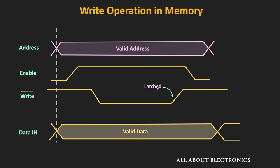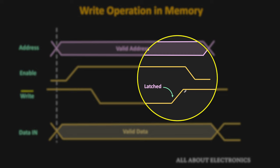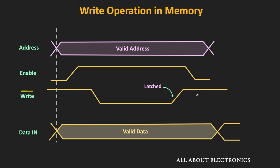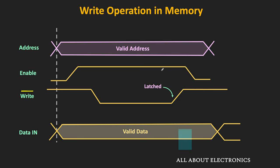At this point, the data is latched in the memory, and as soon as it is latched the write signal gets deactivated. Once it is deactivated, after some time the enable signal is also deactivated. Until the control signal gets disabled, the address and data signals should remain stable, and once these signals are disabled, after a short time a new address can be put on the address line.